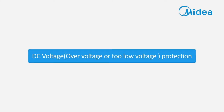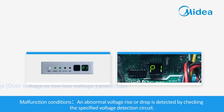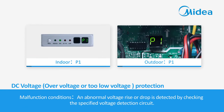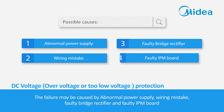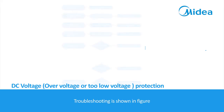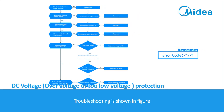DC voltage over-voltage or low-voltage protection. Malfunction conditions: an abnormal voltage rise or drop is detected by checking the specified voltage detection circuit. The failure may be caused by abnormal power supply, wiring mistake, faulty bridge rectifier, or faulty IPM board.